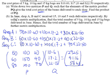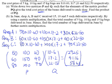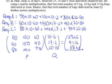Now let's go on to part B. In June, shop A, B, and C received 15, 10, and 5 such deliveries respectively. By using matrix multiplication, find the total number of 5kg, 10kg, and 15kg bags delivered in June. Hence, find the total number of bags delivered in June by further matrix multiplication.